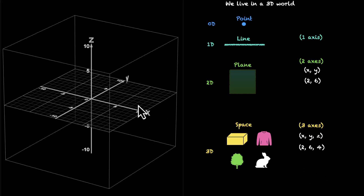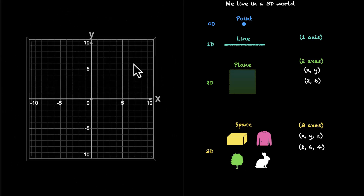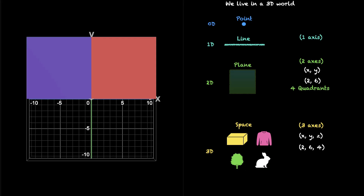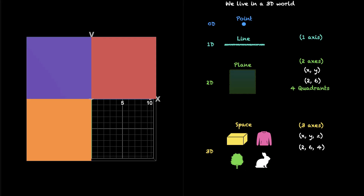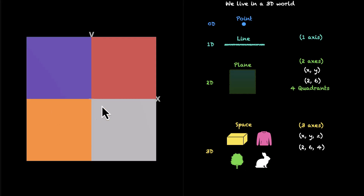These two axes — the X and the Y axis — divide this plane into four parts. We call them quadrants. We have four quadrants. This is the first quadrant — the top right where both X and Y coordinates are positive. Here we have X negative — that's the second. Here we have both negative — that's the third. And here we have X positive and Y negative — that's the fourth. So these are our four quadrants.